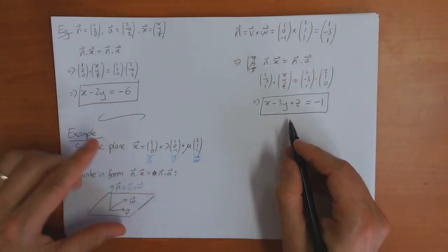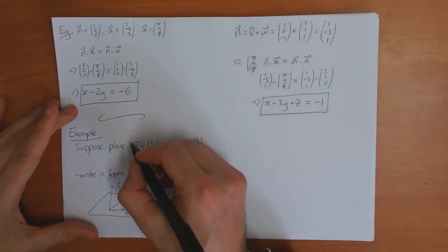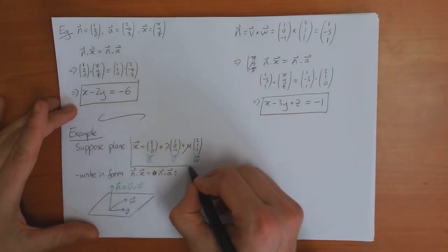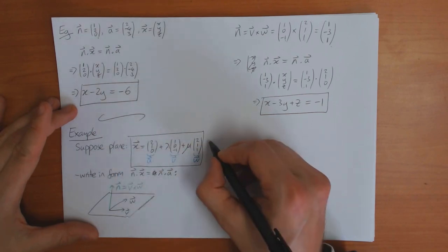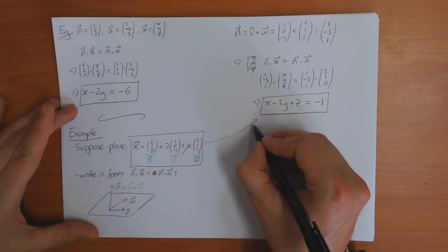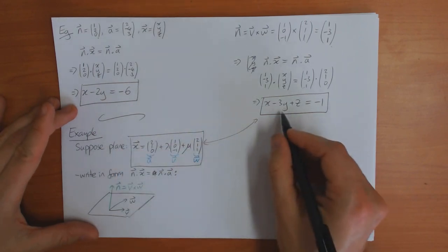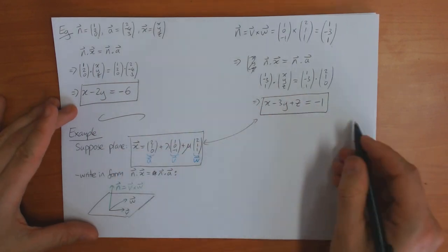So that's the end. We've shown that the parametric equation of the plane in three dimensions is the same as this normal-form equation.